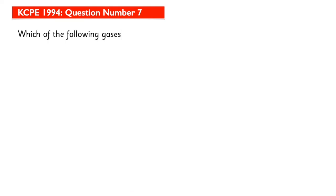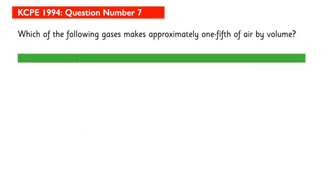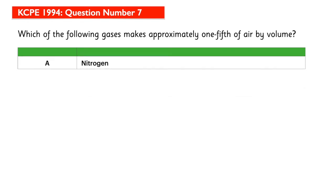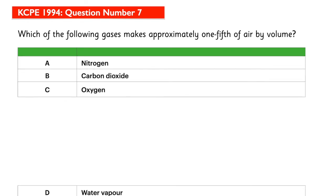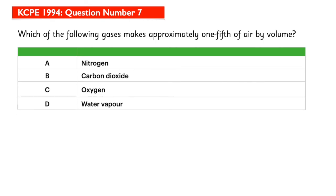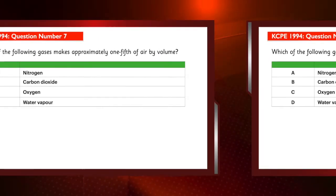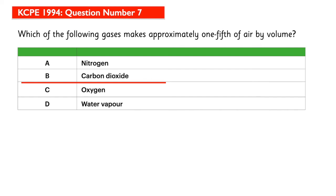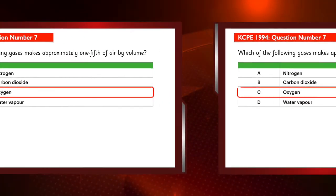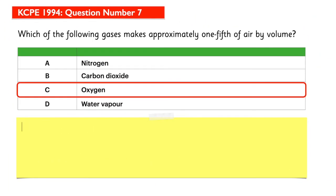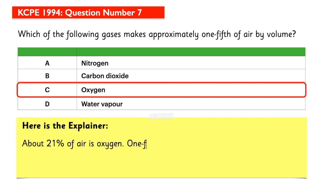Which of the following gases makes approximately one-fifth of air by volume? The answer is C. Here is the explainer: about 21% of air is oxygen. One-fifth expressed as a percentage is about 20 out of 100.